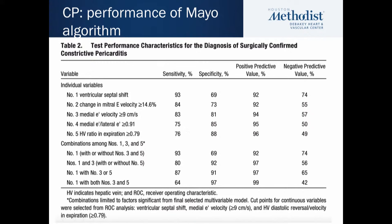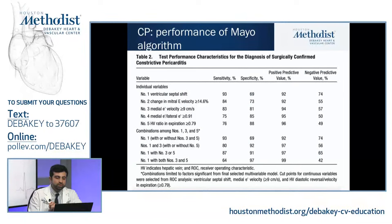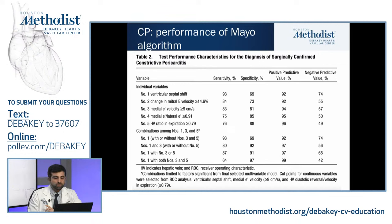Not all patients will follow all the rules. For e-velocity, the described 25% change you're supposed to see is not always there. The annulus reverses is also, in my opinion, highly dependent on the location and distribution of the constriction. Hepatic flow reversal on expiration — you can measure it, but I personally just note if it's present or not. These are all important to look at.